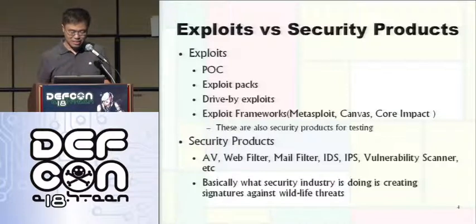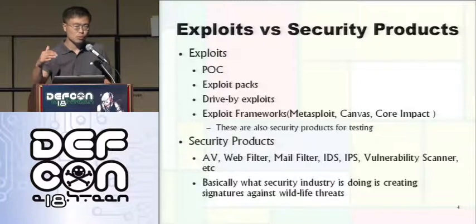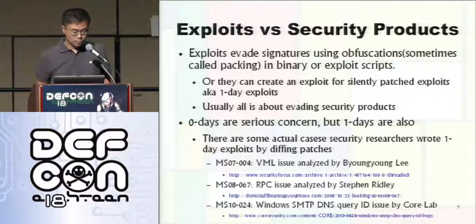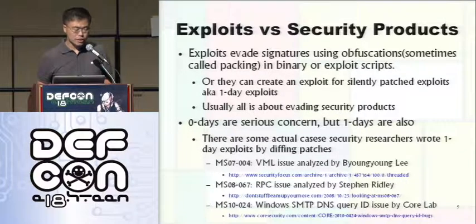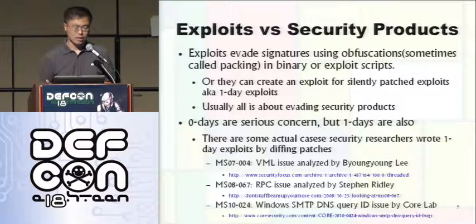Basically what the security industry is doing is creating signatures for vulnerabilities — matching signatures for each vulnerability. Even vulnerability scanners have their own signatures for every CVE number. What exploits are doing these days is using obfuscation to evade signature systems like IDS or IPS. If you look at some JavaScript exploits, you will see random bytes — you will never see the explicit exploit directly. This is all about evading security products.